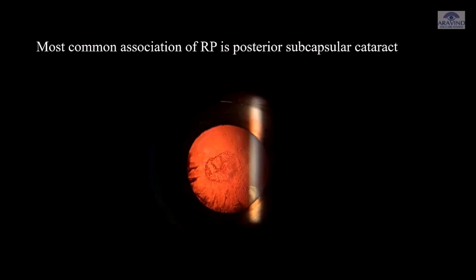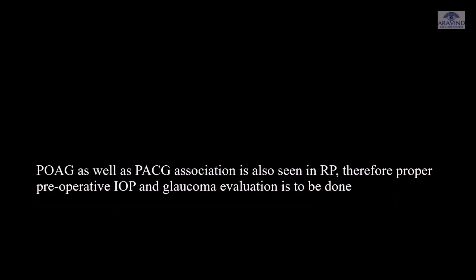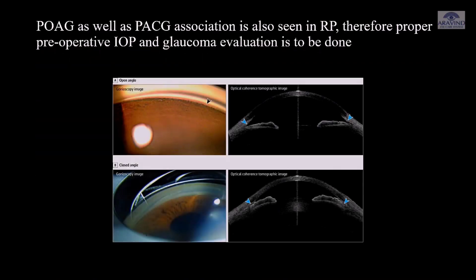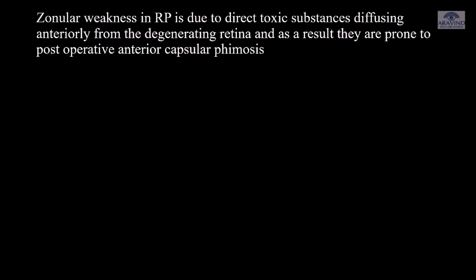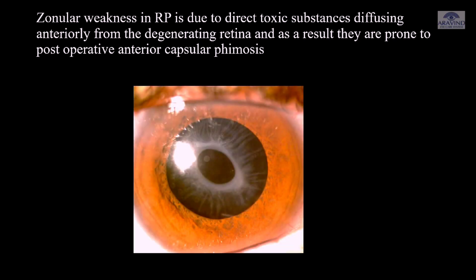The most common association of RP is posterior subcapsular cataract. Primary open-angle glaucoma as well as primary angle-closure glaucoma association is also seen in RP. Therefore, proper pre-operative IOP and glaucoma evaluation is to be done. Zonular weakness in RP is due to direct toxic substances diffusing anteriorly from the degenerating retina, and as a result, patients are prone to post-operative anterior capsulophimosis.